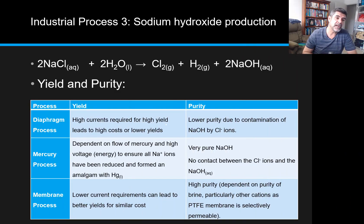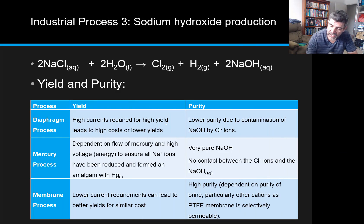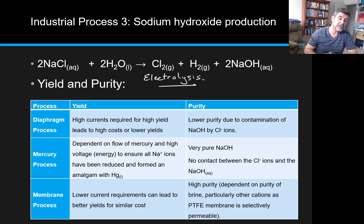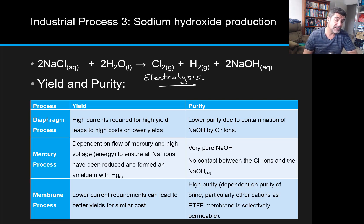Here's the equation to represent the production of sodium hydroxide, and this is actually an electrolysis process. So in this case, what we're doing is using electricity to create a chemical reaction. So that means it's not spontaneous in this direction.